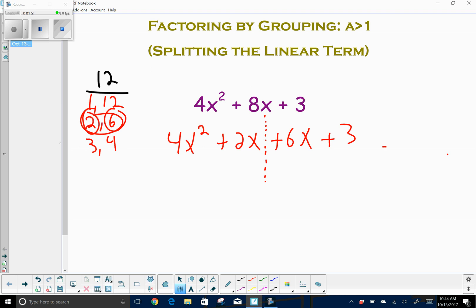On the left-hand side, the GCF of 4x squared and 2x is 2x. So that's where we'll get factored out. 2x, 2 times what is 4? 2. x times what is x squared? x. 2x times what is 2x? 1.